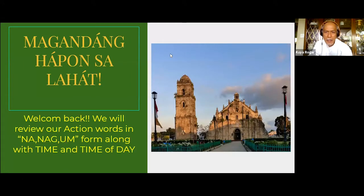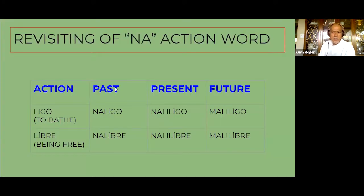Let's begin and go over some of the stuff that we've been very familiar with. Of course, very important is the conjugation for our verbs. We have three kinds of verbs, and we have the na verb — as you can see here — the conjugation past, present, and future. I think everybody is pretty comfortable with that already.